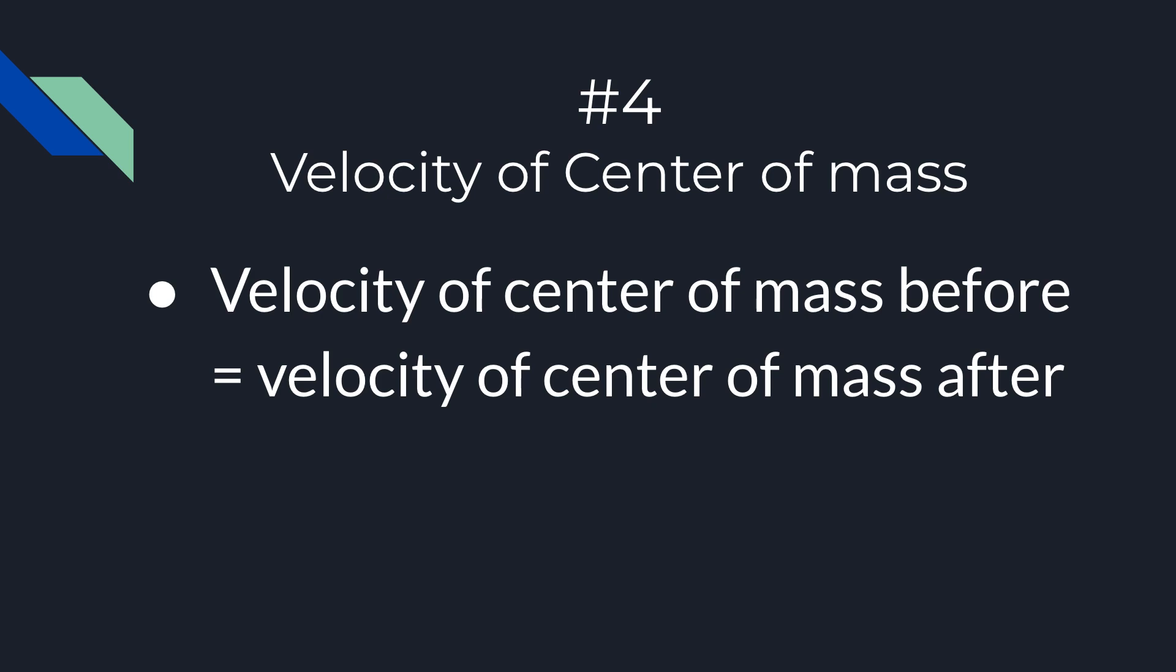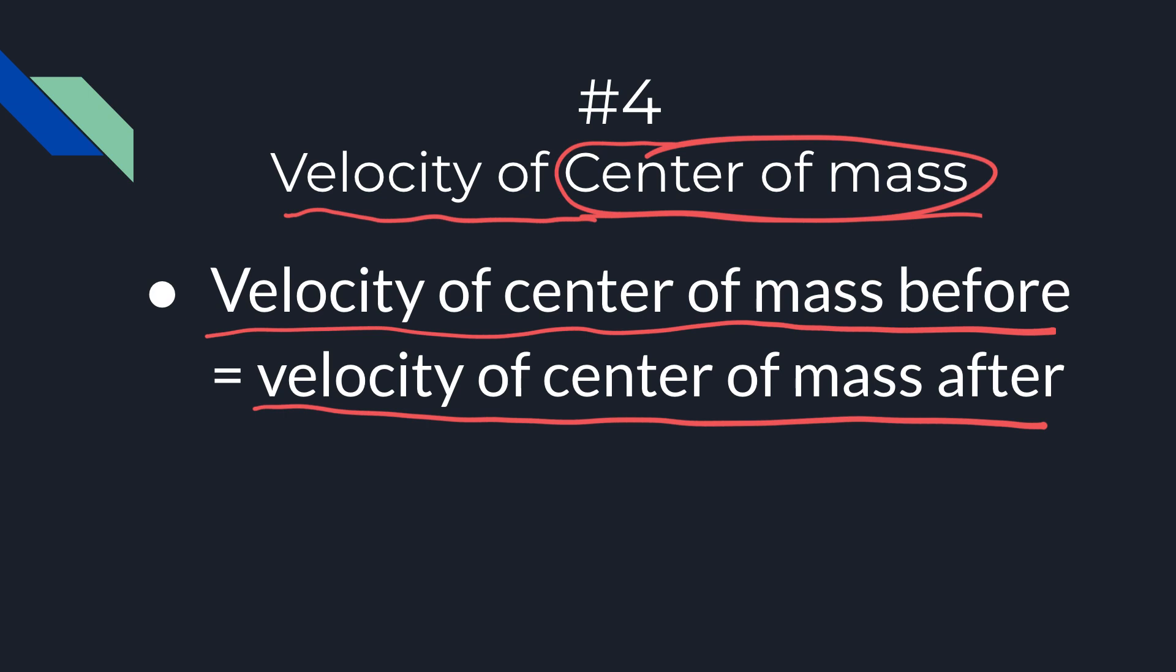Question number four. This is kind of almost a trick question, to be honest. So you might see a collision problem where they say the velocity of this mass after, or the velocity of this mass before, or something like that. But be on the lookout for when they say, what's the velocity of the center of mass? So they're not asking about an individual mass, but the center of the mass. When you see that, the key idea is that it's the same. The velocity of the center mass before is equal to the velocity of the center mass after. So for this one, just be on the lookout for the language of this.